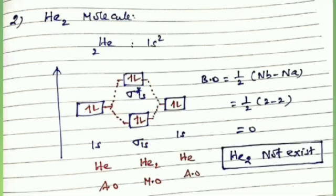Second one is the He2 molecule. Helium has atomic number 2, therefore 1s2 electronic configuration. Helium combines with helium; sigma 1s has 2 electrons and sigma star 1s also has 2 electrons. Bond order = 1/2 × (2 − 2) = 0. Since bond order is zero, the molecule does not exist. He2 molecules are not formed.